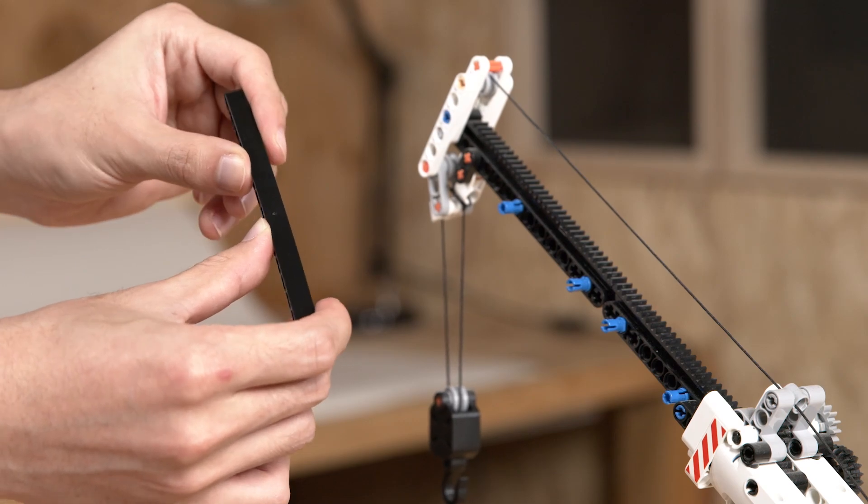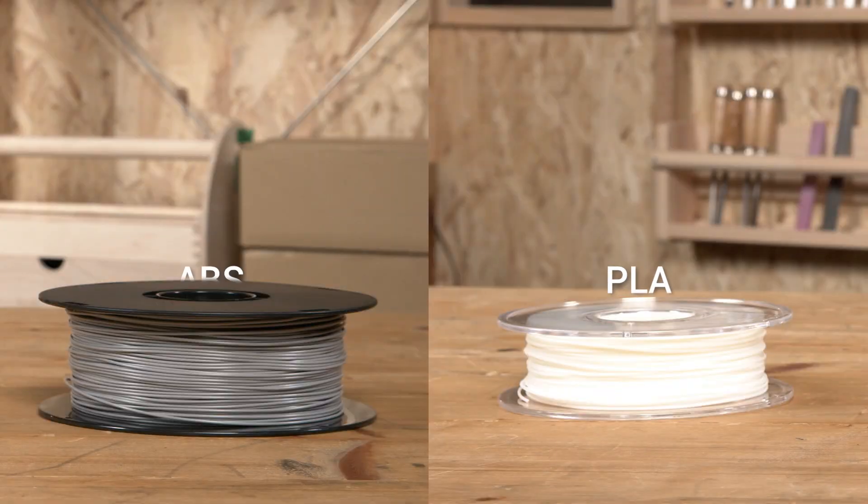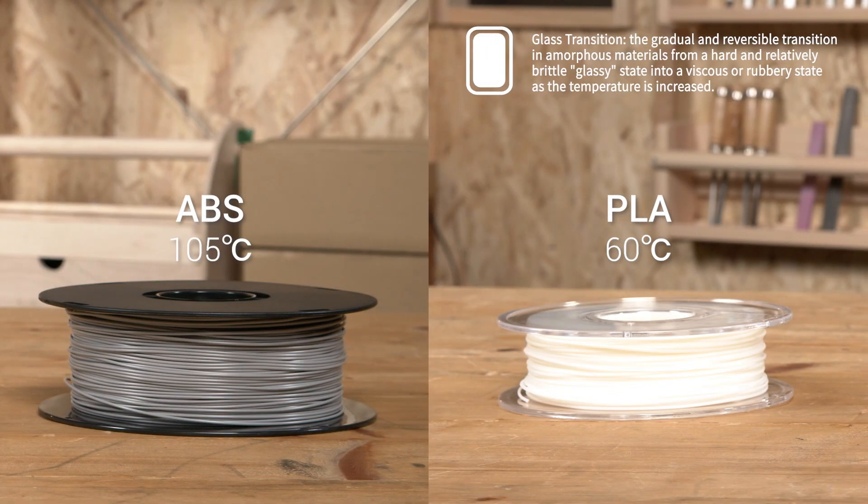Now, it's obvious why building brick toys like Lego are made from ABS, isn't it? The second advantage of ABS is its high glass transition temperature. It's about 105 degrees Celsius for ABS, while only 60 degrees Celsius for PLA.